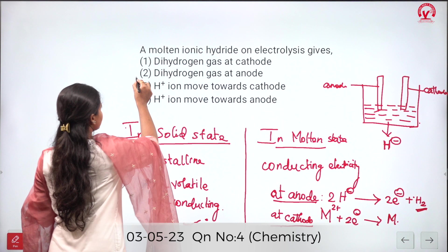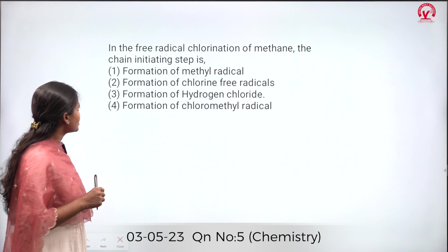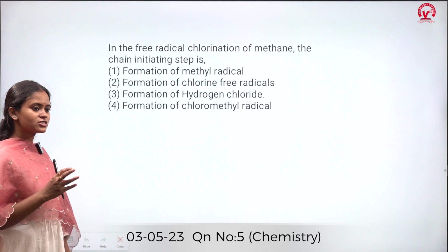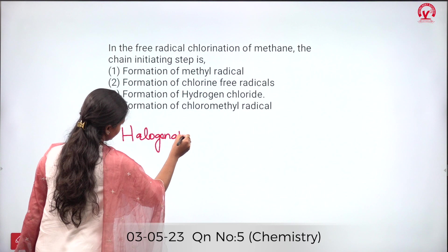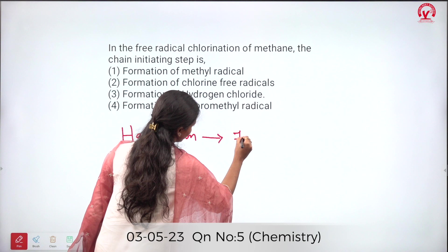In the free radical chlorination of methane, the chain initiating step is asked. In general, halogenation proceeds via a free radical chain mechanism.